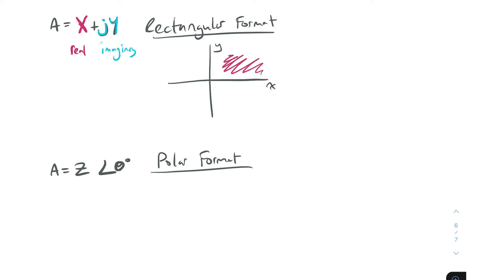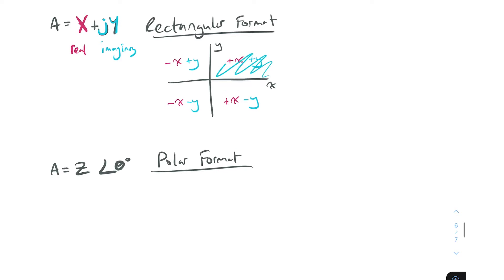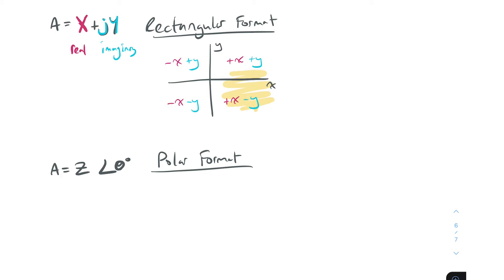Any number in the upper-right has a positive x and positive y component. Any number in the lower-right has a positive x and negative y component. Any number in the lower-left is negative in both x and y. Any number in the upper-left is negative in x and positive in y. The upper half is positive y, the lower half is negative y, the right half is positive x, and the left half is negative x.